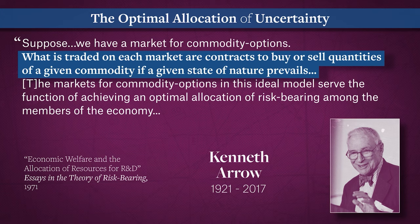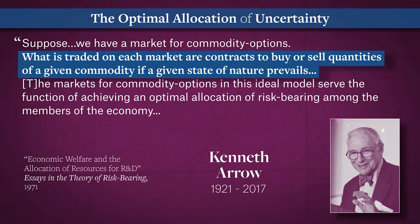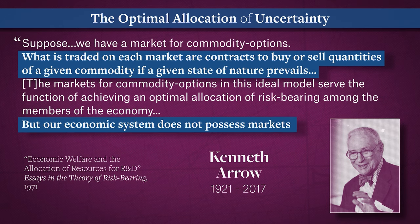Arrow explicitly recognizes that such complete markets do not, in fact, exist. I have always read the Arrow-Debreu theorem as a disproof of the possibility of a general equilibrium ever existing. And Arrow's last sentence here is decisive: 'Our economic system does not possess markets for commodity options.'